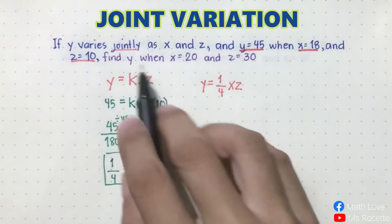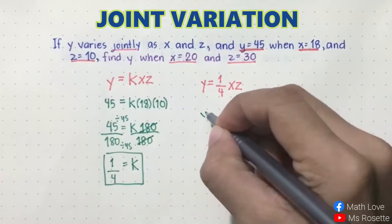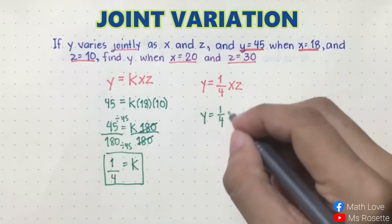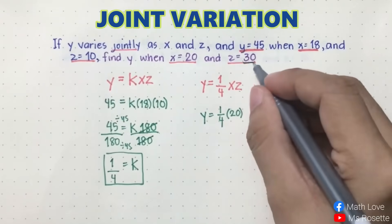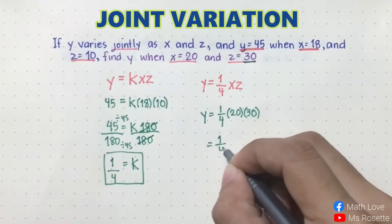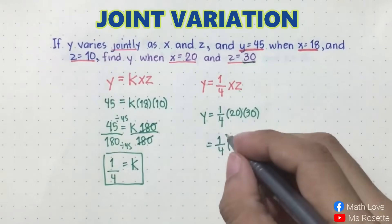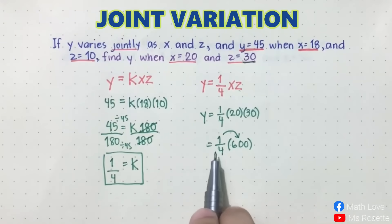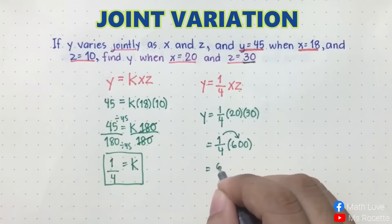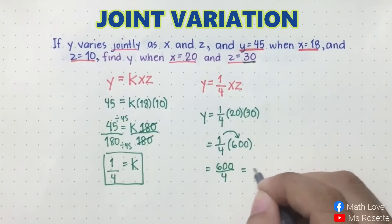Now find y when x is equal to 20 and z is equal to 30. Substituting: y equals 1 fourth times 20 times 30. 20 times 30 equals 600. Then multiply 1 fourth by 600: 1 times 600 is 600 over 4. Simplifying, 600 divided by 4 is equal to 150. So y is equal to 150 when x is 20 and z is 30.